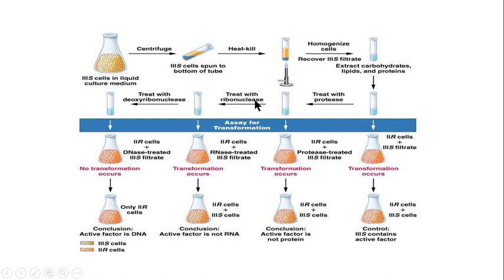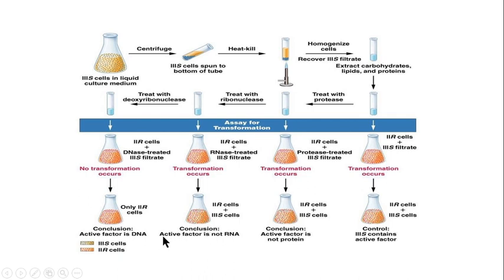In their next experiment, they treated the filtrate with ribonucleases. Ribonucleases are special enzymes that degrade only RNA and do not degrade DNA. When they treated the filtrate with ribonucleases, all of the RNA present in the filtrate was degraded. They then mixed the rough cells with this RNA-depleted smooth cell filtrate. If RNA were the genetic material, transformation should not occur after RNA degradation. But what they observed was that transformation was still occurring and they were getting both rough and smooth cells, thereby concluding that the active factor is not RNA.